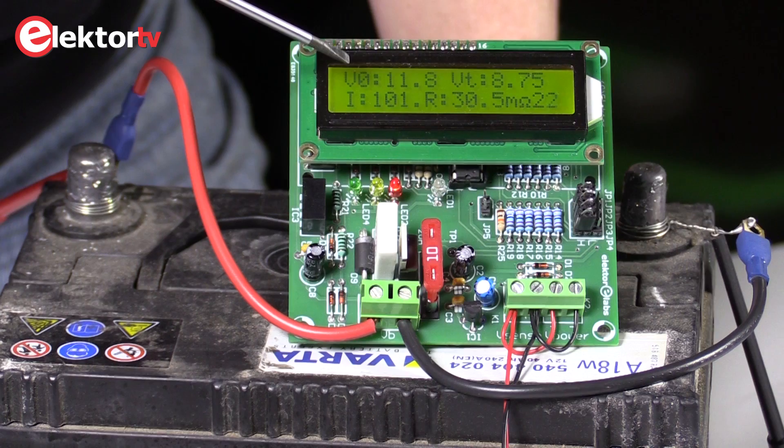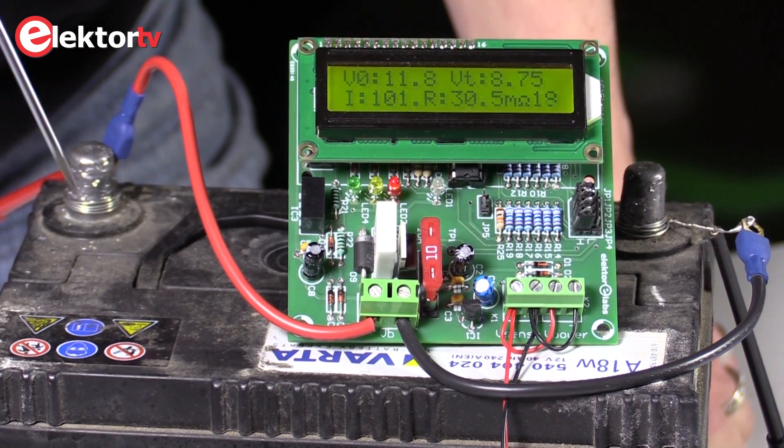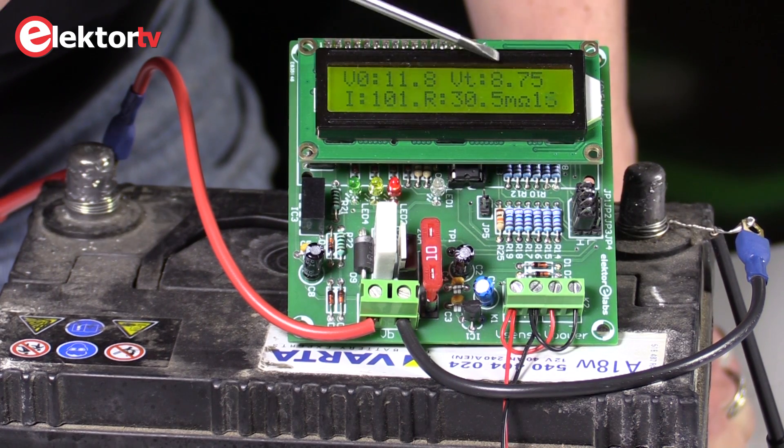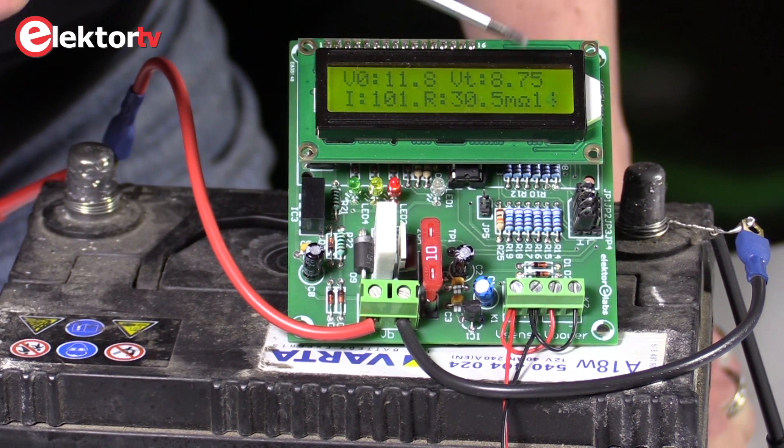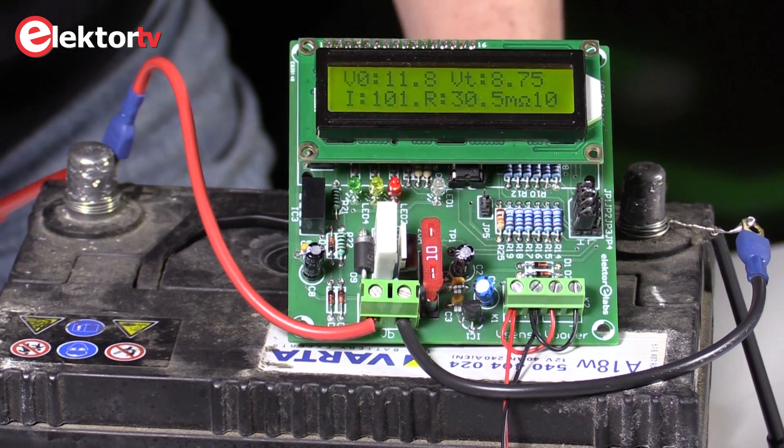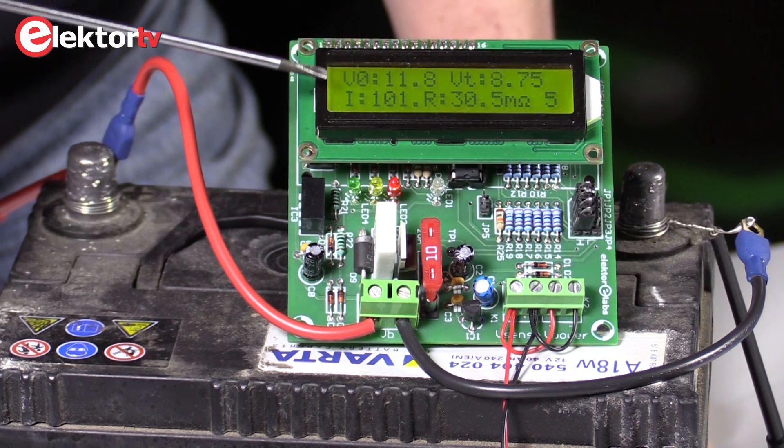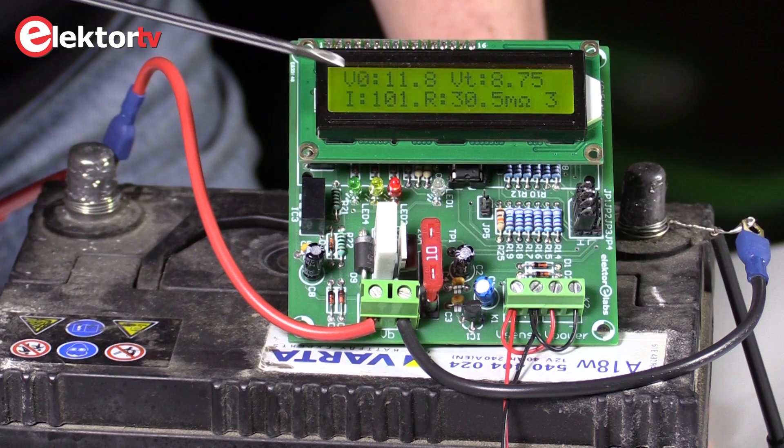This voltage is the voltage of the battery when there are no current pulses. This 8.75 volts is measured when about 100 ampere is drawn from the battery. You can see the current here, 101 ampere it says.